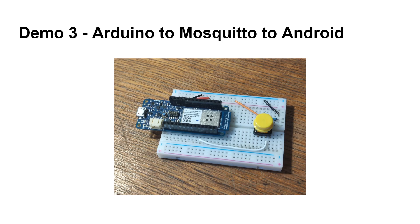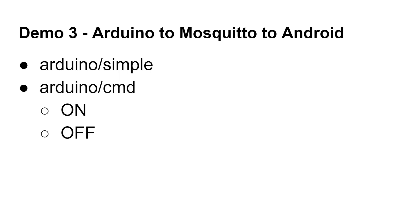I've got Arduino code on here with an MQTT client. All of this will be inside my GitHub repository, and it connects to the same Raspberry Pi MQTT broker server. In the Arduino, we're going to have two topics: 'arduino/simple' and 'arduino/command.' These are case sensitive — I'm using 'arduino' all in lowercase now, unlike 'Gary' which was in uppercase. You can also have subtopics using slash notation.